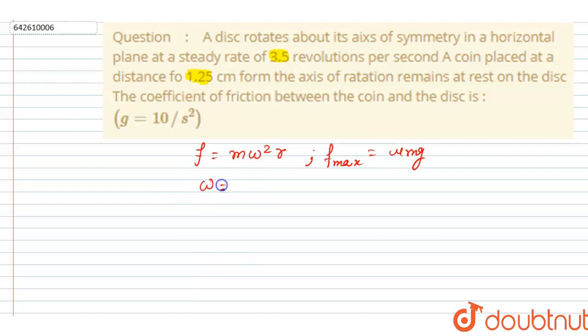Here, omega is given as 3.5 revolutions per second, so I will write 3.5 into 2 pi, that will be equals to 7 pi radians per second. So we got the omega, and r is given here as 1.25 cm, that is 1.25 times 10 to the power minus 2 meters.